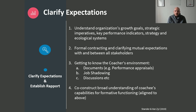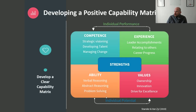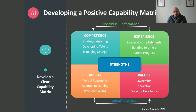Based on all this information, we co-construct a broad understanding of a coachee's or leader's capabilities — what they require to function effectively in their specific role. From this, we set up what we call a positive capability matrix. We know that growth is a function of two things: individual performance and a person's potential. On the individual performance side, we focus on specific competencies required for that job — for example, strategic visioning, talent development, or managing change — and we figure out ways to assess each one. We also know that past experience predicts future performance.